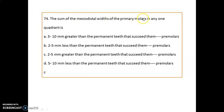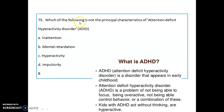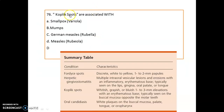The sum of the mesiodistal width of the primary molars in any one quadrant is 2 to 5 mm greater than the permanent teeth — premolars — that succeed them. Regarding ADHD, attention deficit hyperactivity disorder: mental retardation is NOT a principal characteristic of ADHD. It is a disorder appearing in early childhood involving inability to focus, being overactive, and inability to control behavior. Kids with ADHD act without thinking and are hyperactive.